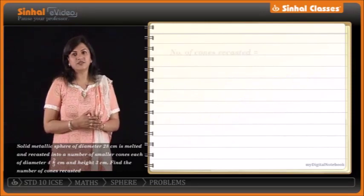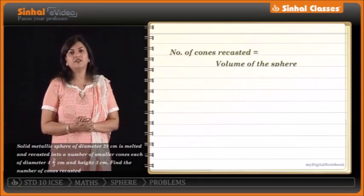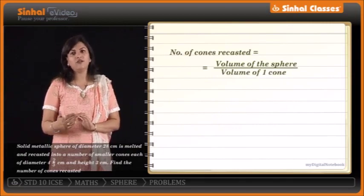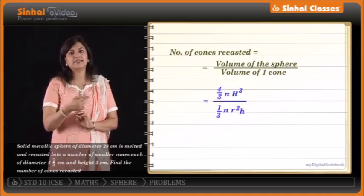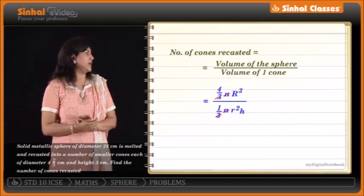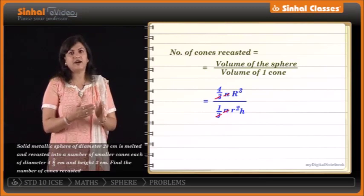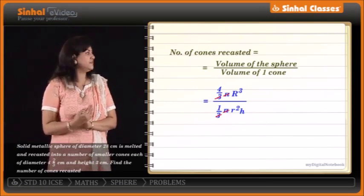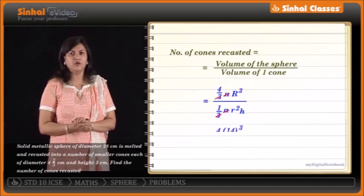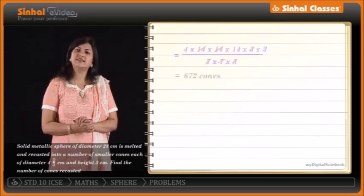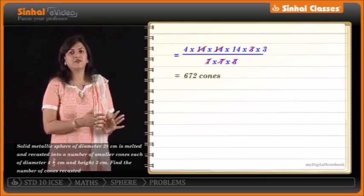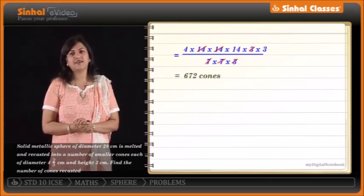The number of cones recast equals volume of sphere upon volume of one cone: (4/3)πR³ ÷ (1/3)πr²H. Cancelling 3 and π and substituting values of R, r, and H, we simplify to get 672 cones. So the number of cones recast is 672.